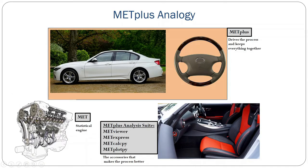Here's an analogy for METPLUS in case the previous descriptions haven't really helped you understand it. MET is the statistical engine — it does all the work, but it can't go anywhere unless it has something else to move it. So METPLUS is basically the workflow; it drives the processes and keeps everything together — it's kind of like the chassis, the wheels, the steering wheel, and so forth. The METPLUS analysis suite is comprised of the user interfaces as well as the calculation and plotting capability — basically the accessories that make the process better.